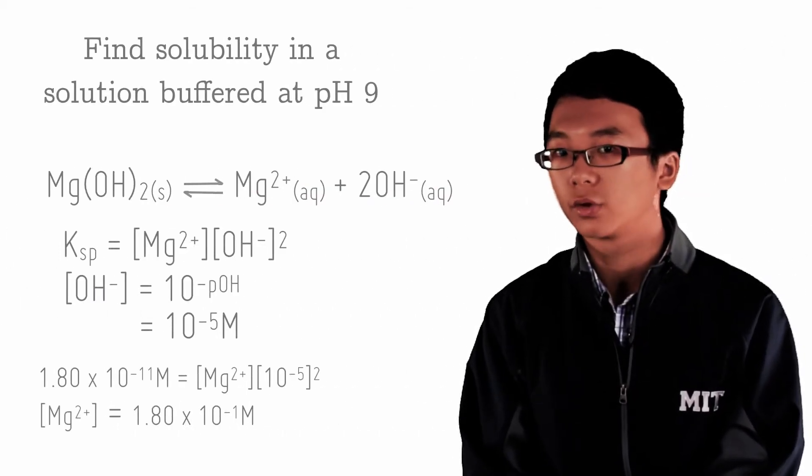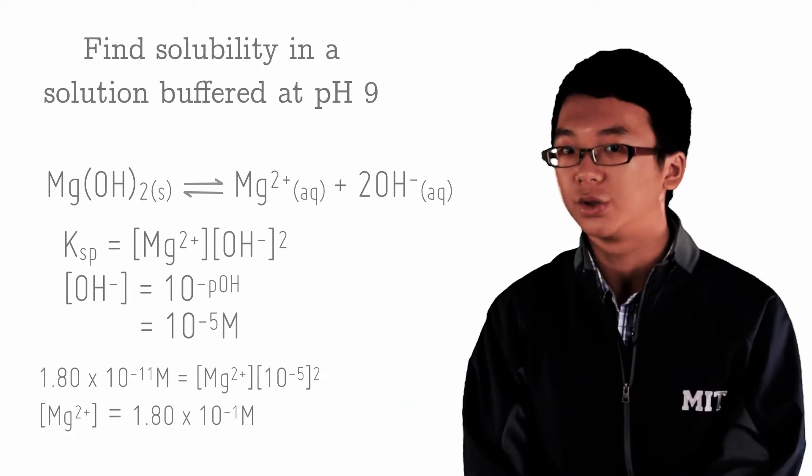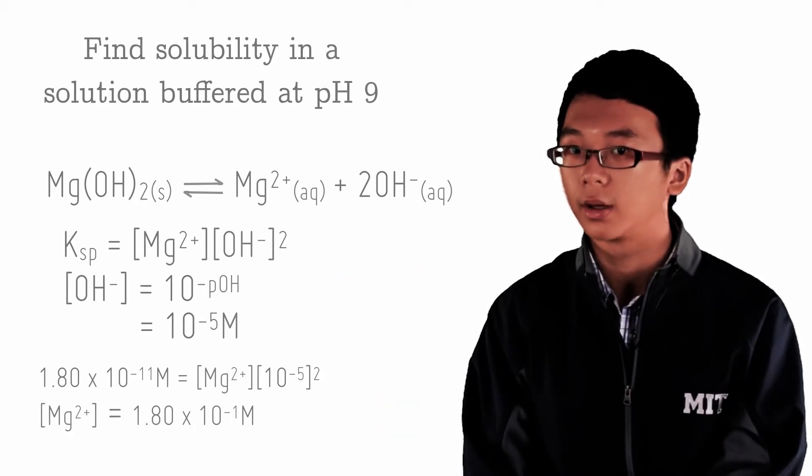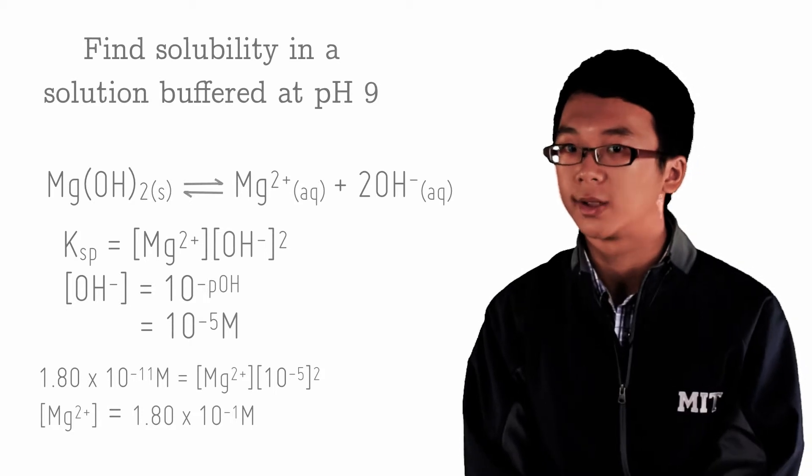So the first step again, write the equilibrium expression for the unknown Mg2+, give it x, and take into account the concentration of hydroxide already present in the solution.